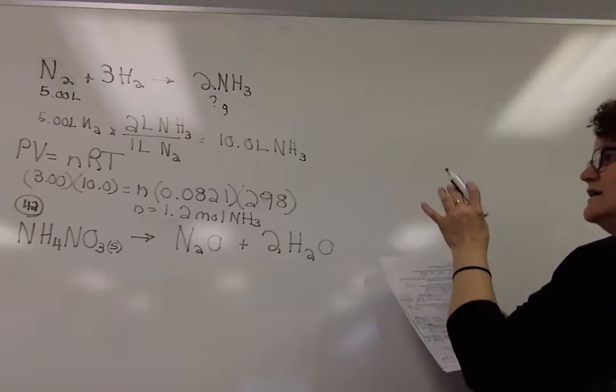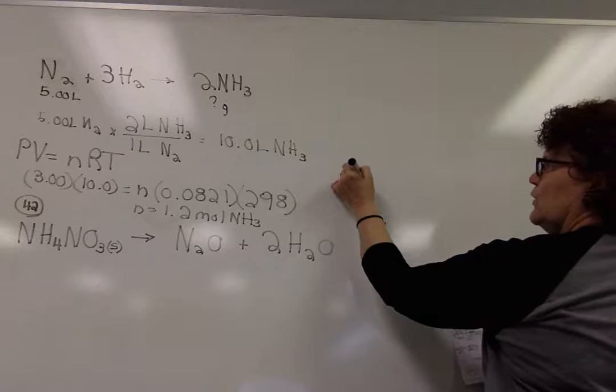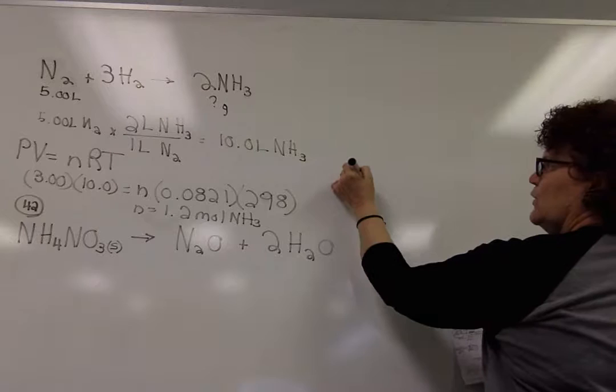Because that's what we found the volume of. That was the number of moles of the ammonia. So now since it asked us for grams—I'm going to go right here. 1.2 moles of NH3.